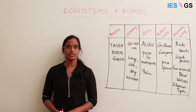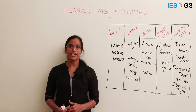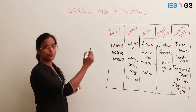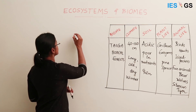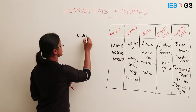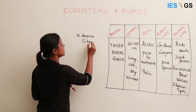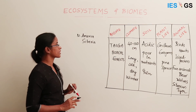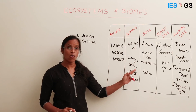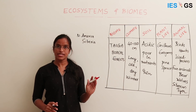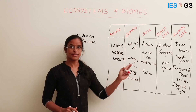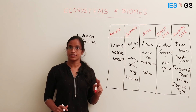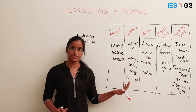Now let us see about the taiga forest or boreal forest. The taiga region forms a continuous belt below the polar latitudes, covering North America, Asia, and Siberia. The main characteristic of the taiga region is long, cold, and dry winters. The growing season is very short and rainfall is 40 to 100 centimeters. The trees here are confined to coniferous trees; hardwood trees are not found here — only softwood coniferous trees.